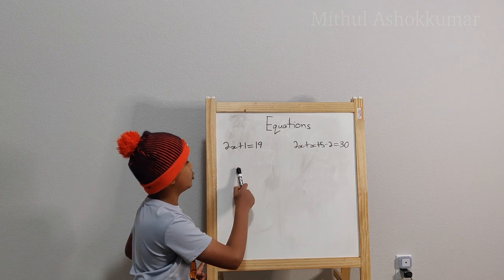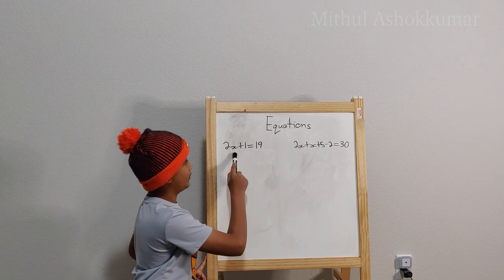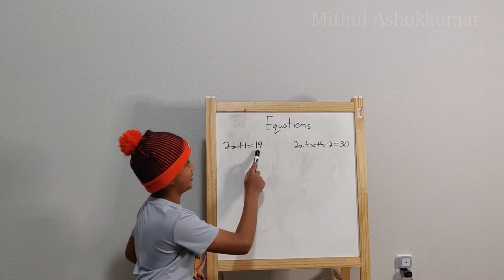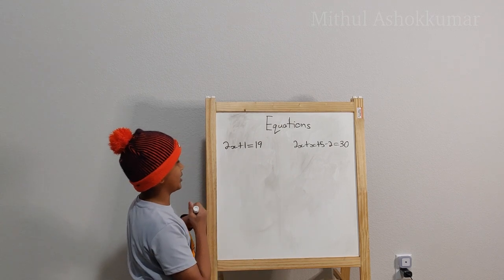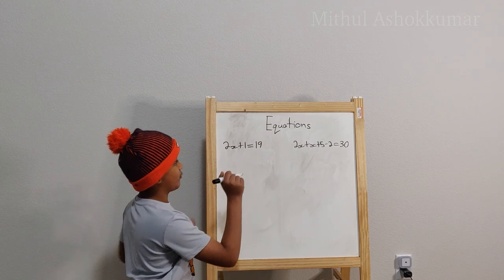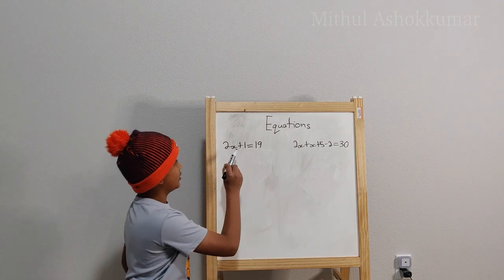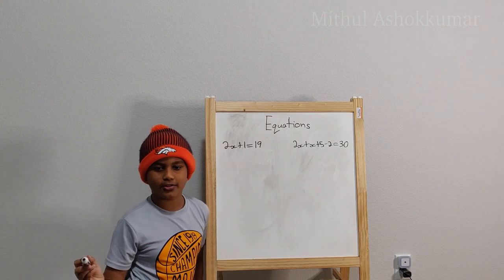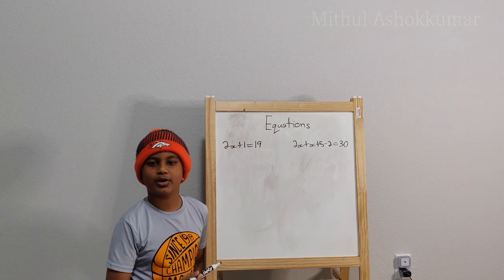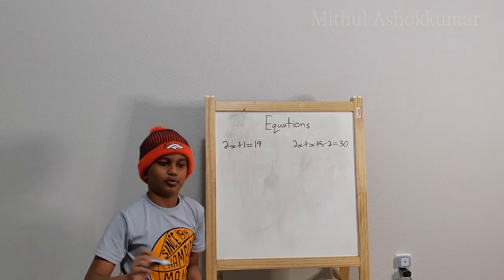But how do we get the 2x by itself? Well we have the 1 here and the 19 here. So what we will do is subtract 1 from both sides. If you are going to do something on one side, you have to do it to the other side otherwise your equation will never be true anymore.